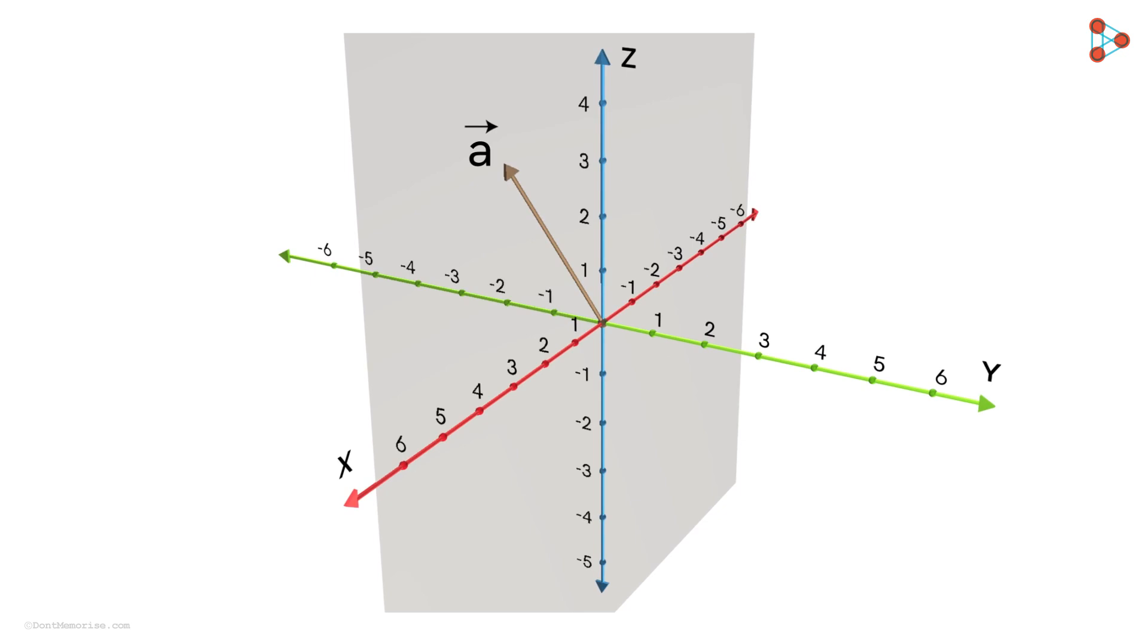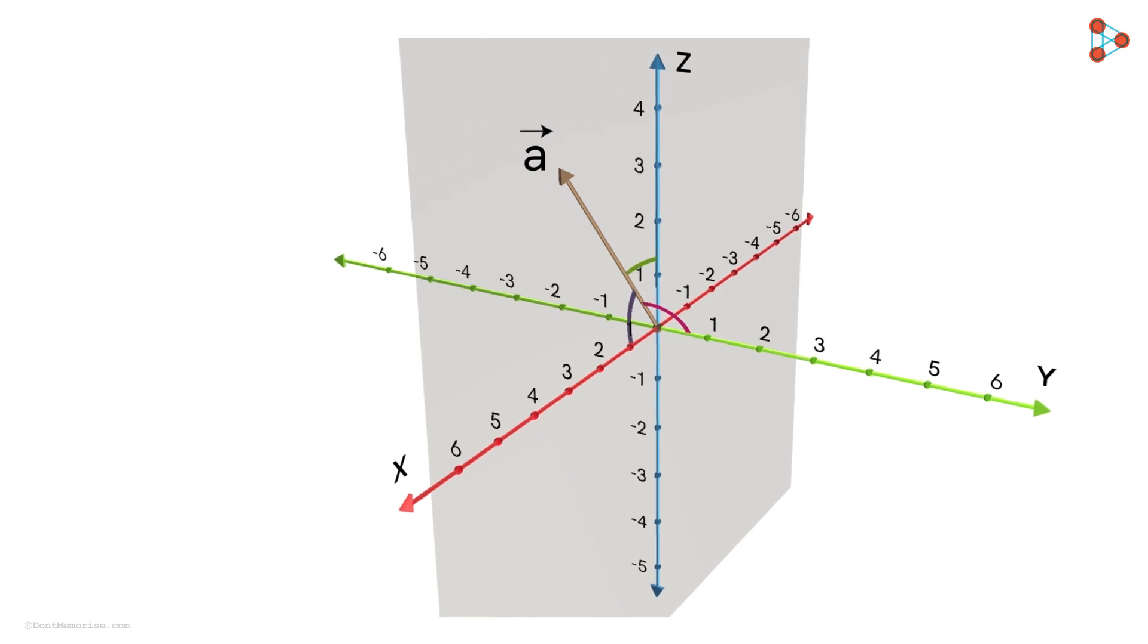It's making some angles with the positive x-axis, positive y-axis, and the positive z-axis. It makes 60 degrees with positive x-axis, 120 degrees with positive y-axis, and 45 degrees with positive z-axis.